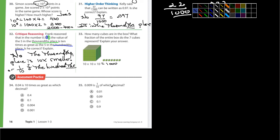So what fraction of the entire box do the 7 cubes represent? Yeah, I'm going to ask somebody about that one. So in other words, write a fraction of, in other words, 0.007. Convert that into a fraction. All right. 34, 35, you guys can do on your own. These will be worth group points.